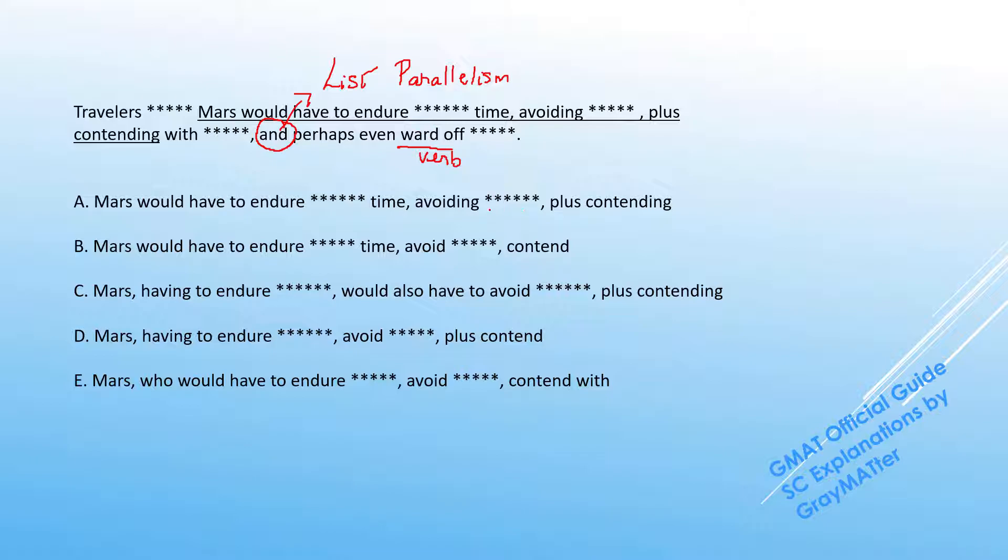If we take a quick vertical scan of the verbs in the list, and we can use the end of the answer choices to catch quick elimination points, we can notice that A and C say 'contending'. We're trying to say that the travelers to Mars would have to contend. So contending is obviously not parallel. A and C will be out.